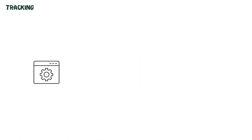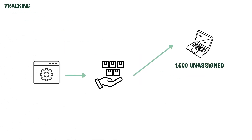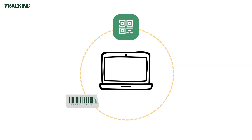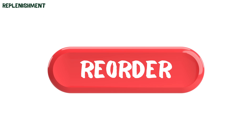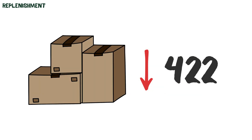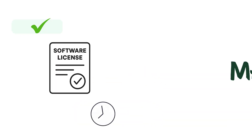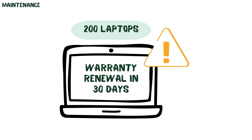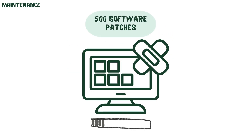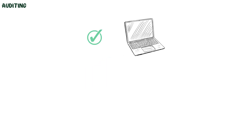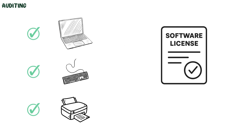Tracking: software tracks quantities and stock — 1,000 unassigned laptops and 2,000 unused licenses. QR code, barcode, or RFID tags monitor laptops in storage. Replenishment: reorder points are set — when laptop stock drops to 400, 200 are ordered, and software license renewals are planned automatically. Maintenance: 200 laptops are flagged for warranty renewal in the next 30 days, and 500 software patches are rolled out automatically. Auditing: quarterly scans find 50 untracked devices (shadow IT), and reconciliation updates stock and recovers $100,000 in unused licenses.